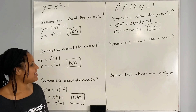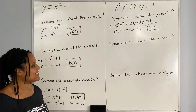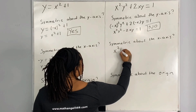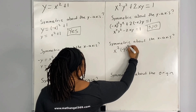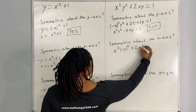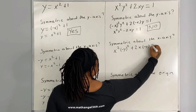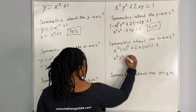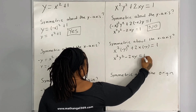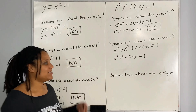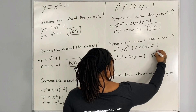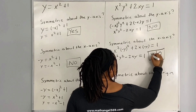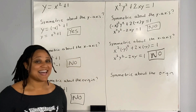Now let's check to see if the graph of the equation is symmetric about the x-axis. We are going to replace everywhere that we see a y with negative y. Then we get x squared y squared minus 2xy is equal to 1. Again, we do not get the original equation, therefore it is not symmetric about the x-axis.